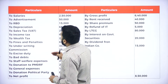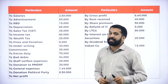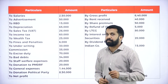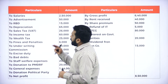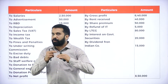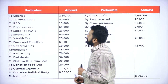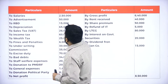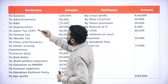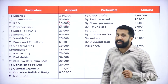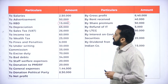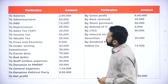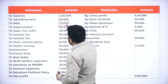Now, which are the items that come under disallowed — we call it inadmissible expenses? Like, from the list: salary will not come, advertisement no, R.B.D. yes. Depreciation — we have to see, do we have an adjustment on that? Yes, so we are supposed to consider depreciation.